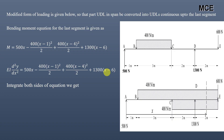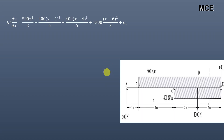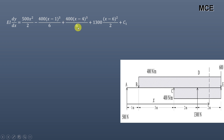Integrating both sides once: EI dy/dx = 500x²/2 − 400(x−1)³/6 + 400(x−4)³/6 + 1300(x−6)²/2 + C1. Note that each bracketed expression is treated as a single variable during integration, so (x−1)² integrates to (x−1)³/3, and so on.